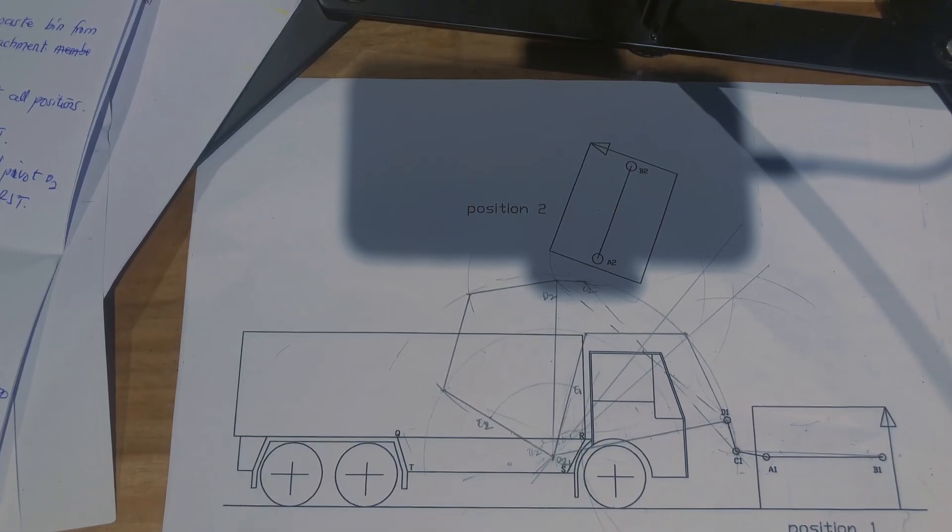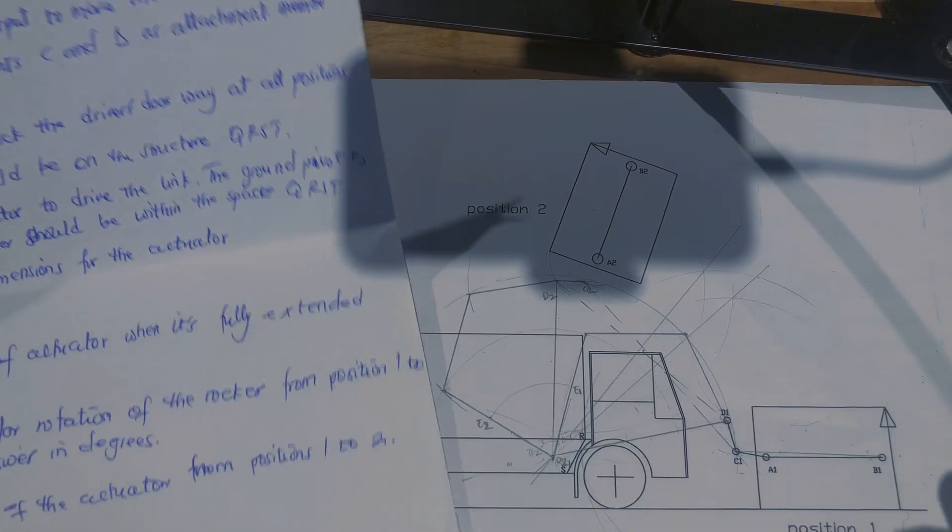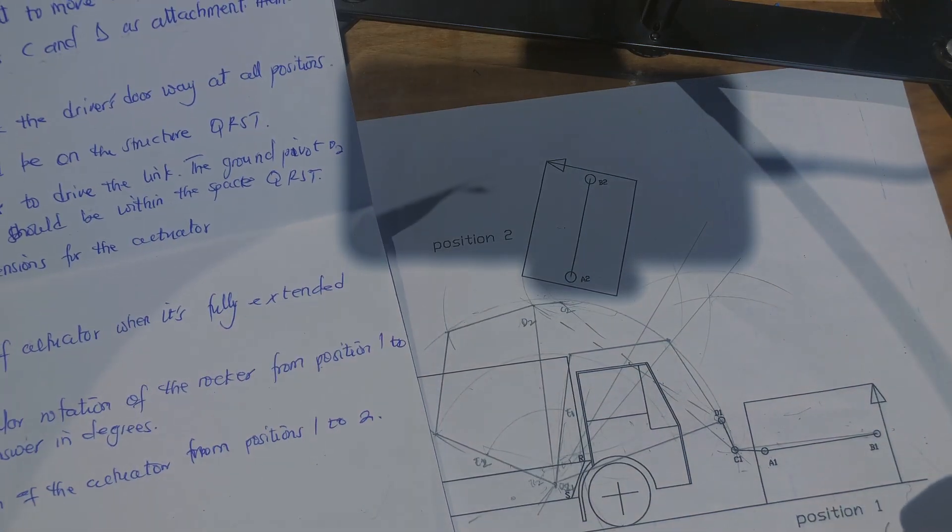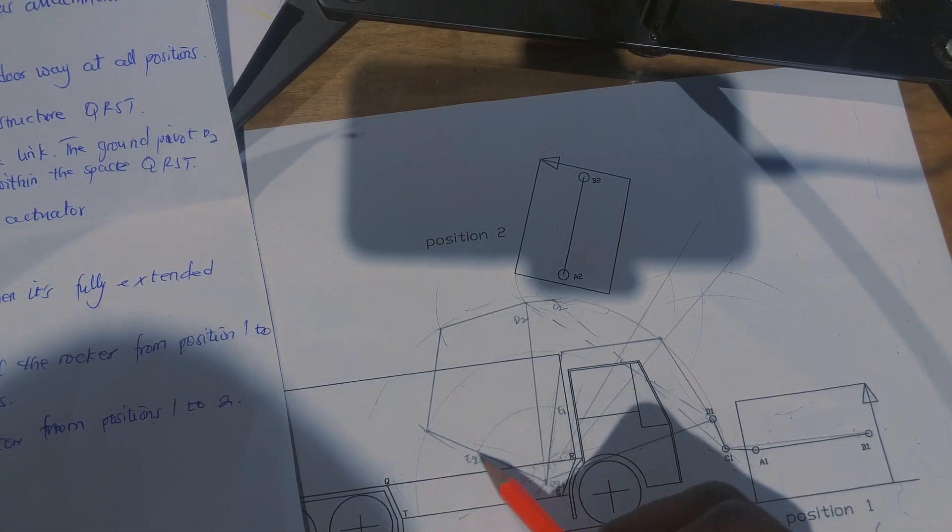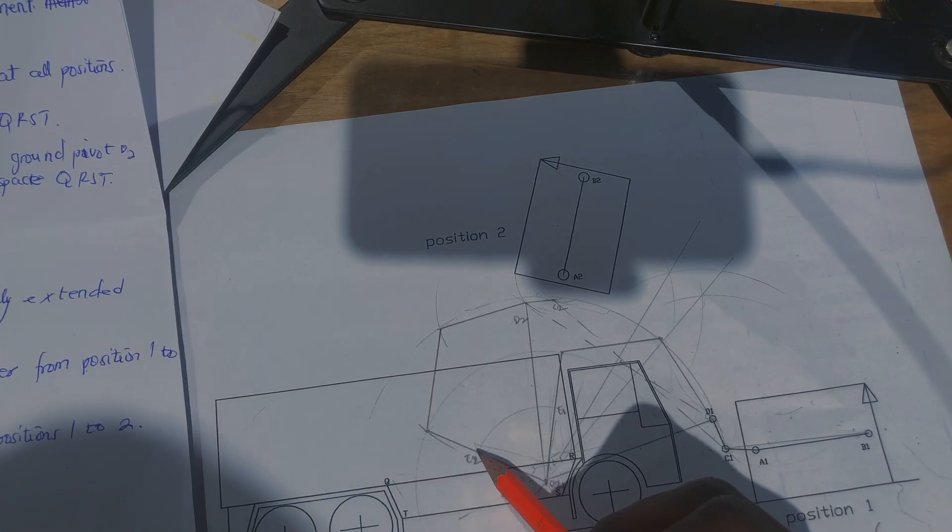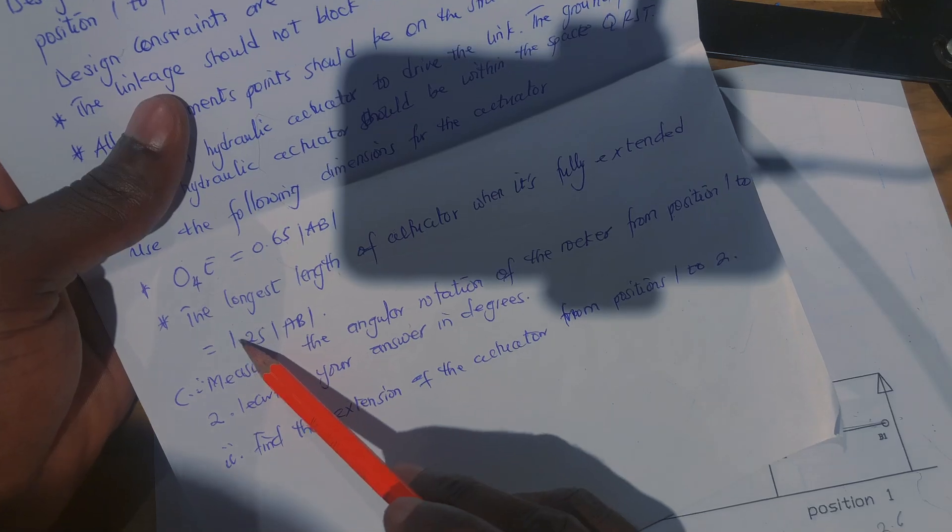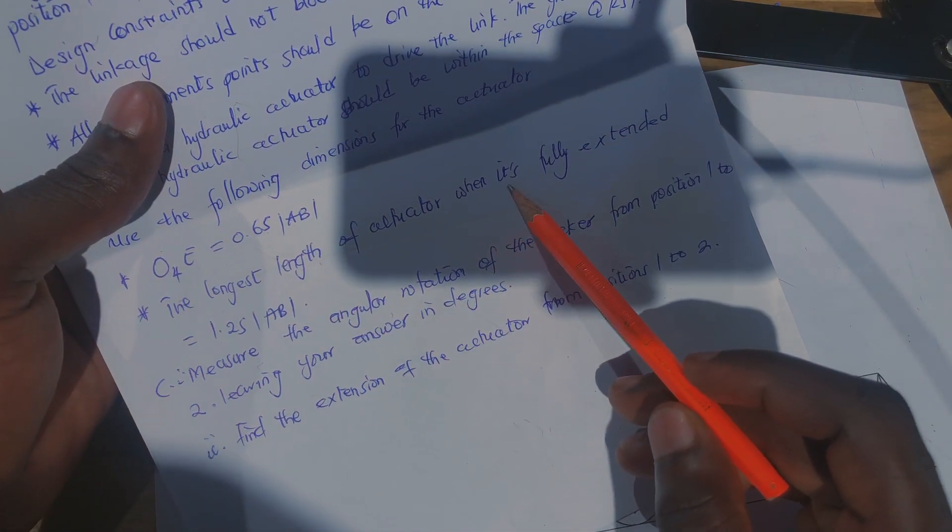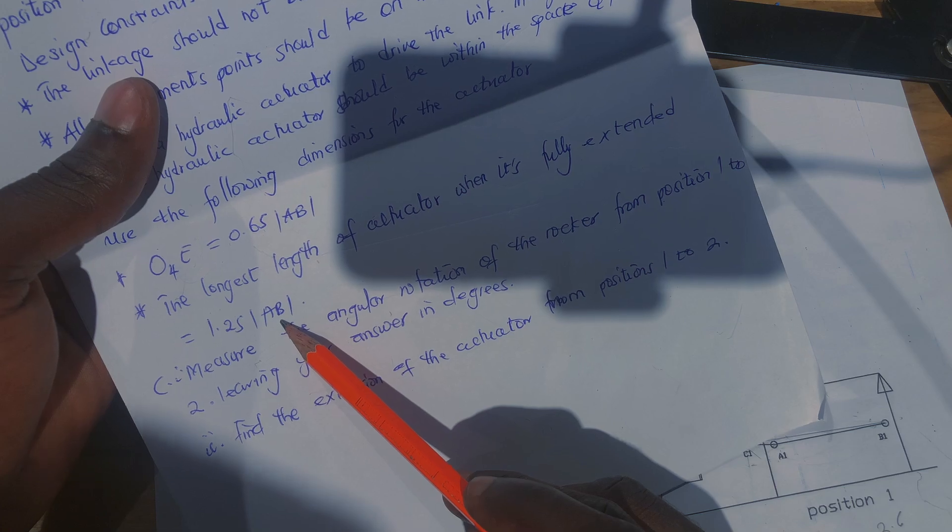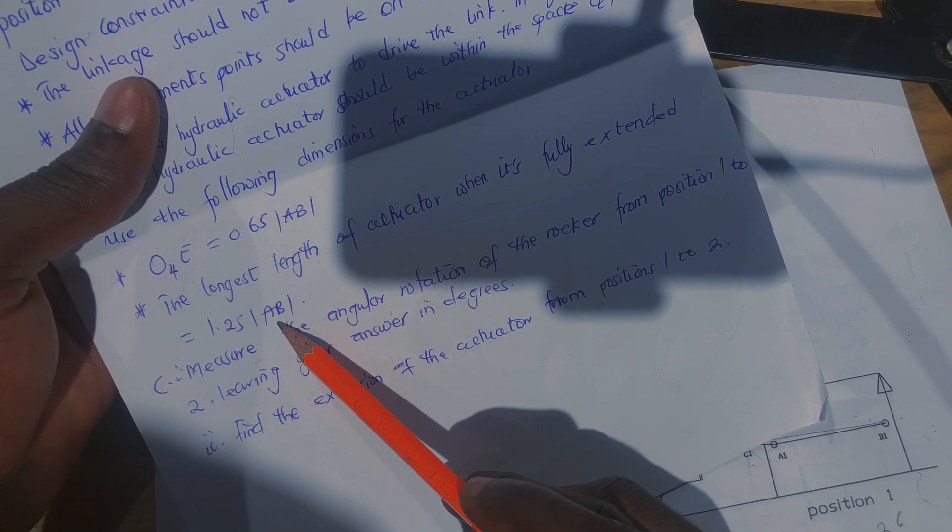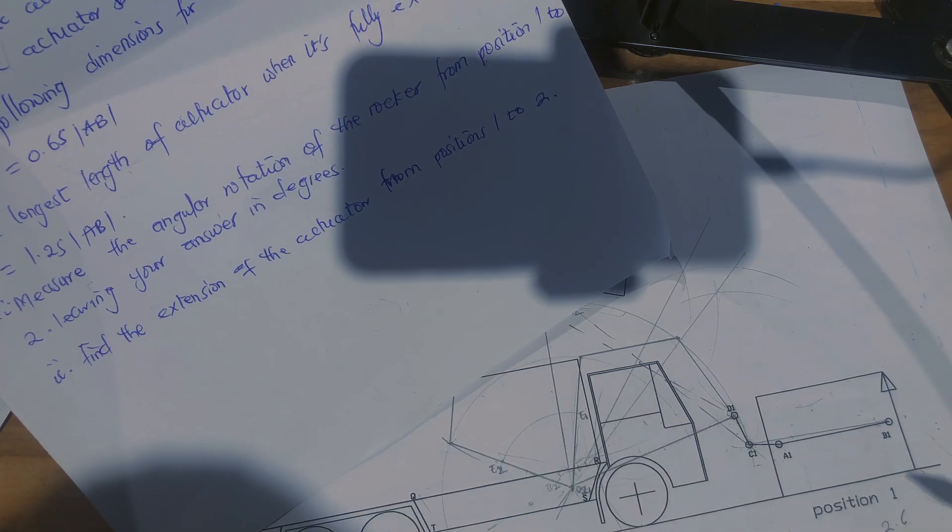We are back from the commercial break. So we got five here, we measured five from here to here to get our point of potential for the actuator. Now the instruction was measure the longest length of the actuator when fully extended, which should be 1.25 times AB, which we calculated as five. The first one was the attachment which was 2.6.